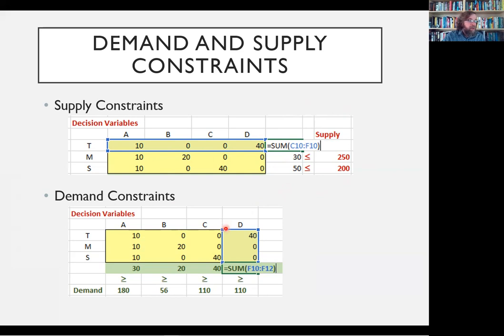And then for our demand constraints, the amount that we ship from T to A plus M to A plus S to A, goes at up to 30. And in the final answer, those are supposed to be greater than or equal to 180. Obviously, our current tentative solution is not a feasible solution to the linear program because we're not satisfying all of the customer demands.